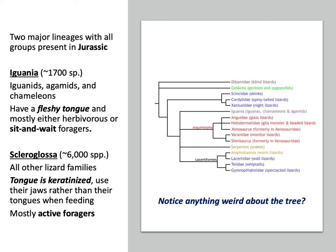Then you have the other large group called the scleroglossans — 'scleroglossan' just means hard tongue. The tongue is keratinized, meaning they're less reliant on manipulating objects with their tongue and instead tend to be the more carnivorous, prey-chasing type of lizard. Here is a phylogenetic tree showing the relationships of all the different lizards.